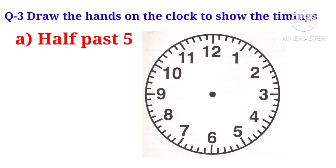Question number 3, draw the hands on the clock to show the timings. Yahan aapko time diya gaya hai, aapko hands draw karne hai. Next one is half past 5, which means time is 5:30. Now how will we show it? Our hour hand is between 5 and 6 and minute hand is at 6. This is how we show the time 5:30.